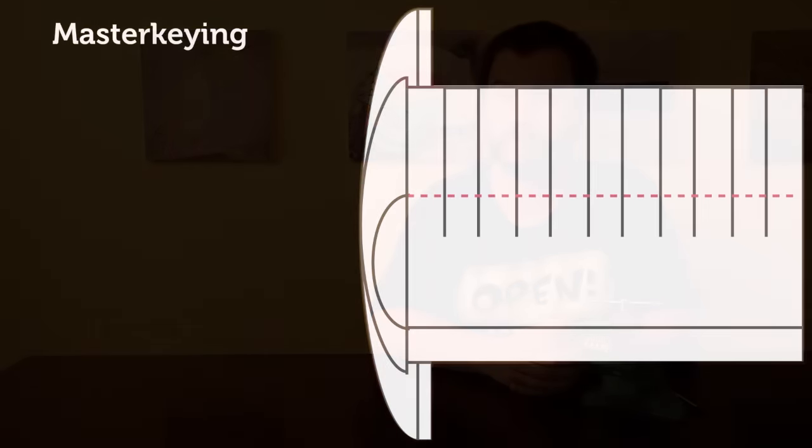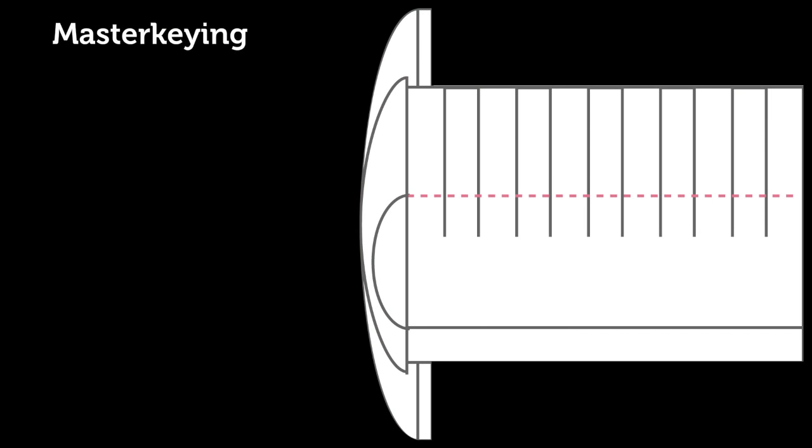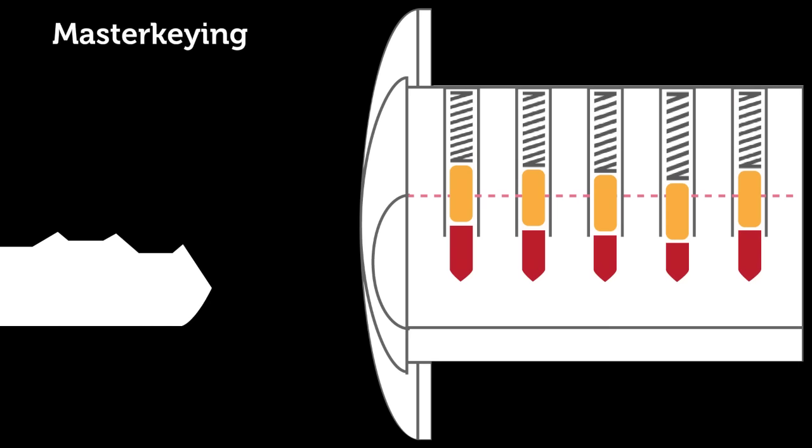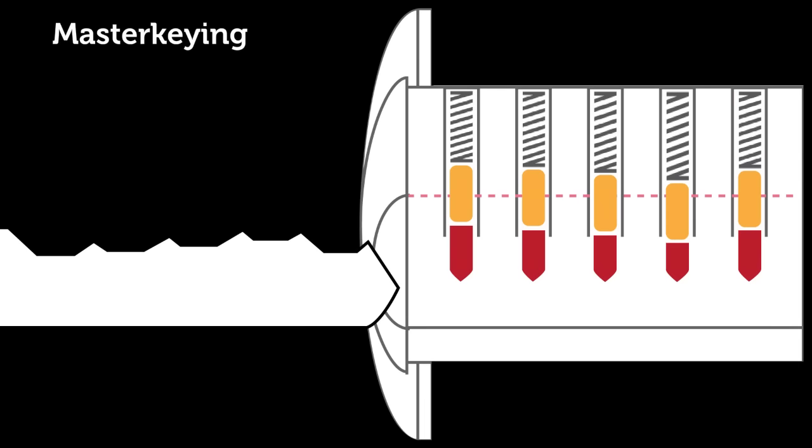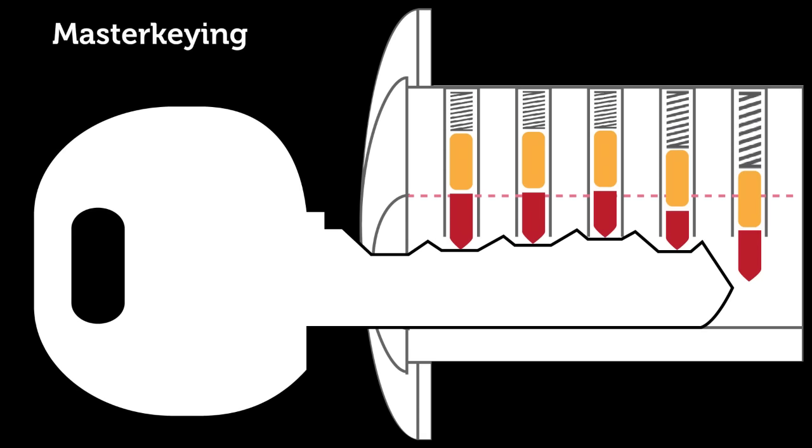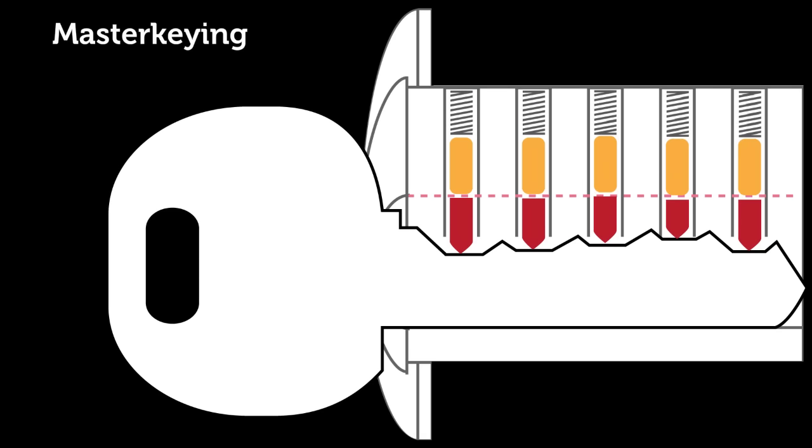Here's how master keying works. First, I'll just drop some pins into this lock so we can explain the basics of how a normal lock works. As you know, when the key enters the lock, it will raise the keypins up so that the top of the keypin and the bottom of the driver pin sit together at the shear line.